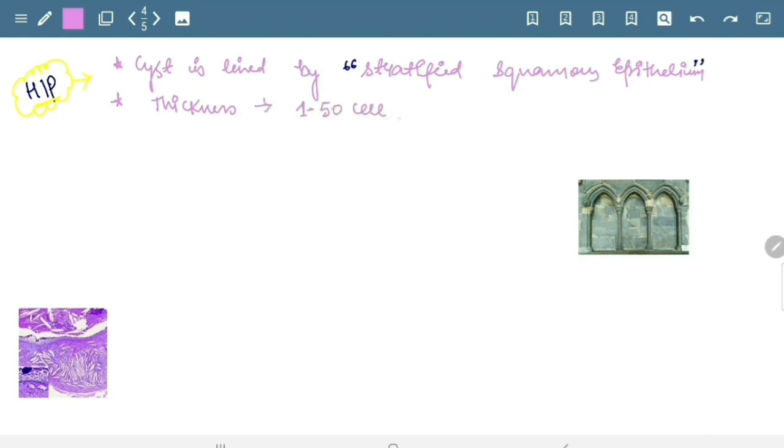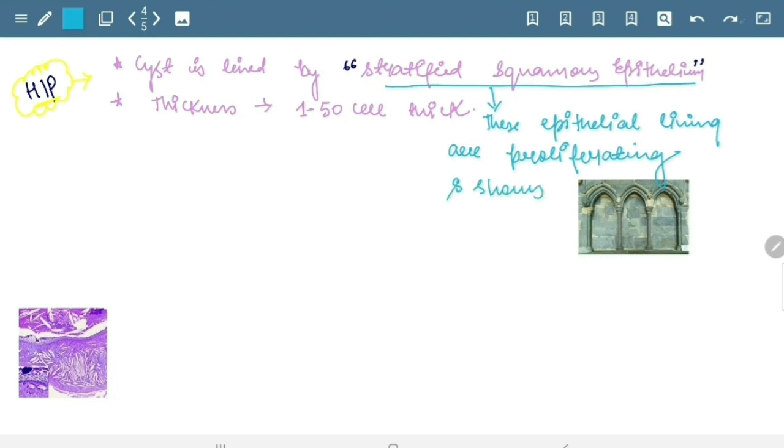1 to 50 cells thick. Okay. This stratified squamous epithelium, these epithelial lining are proliferating and shows what arcading pattern.